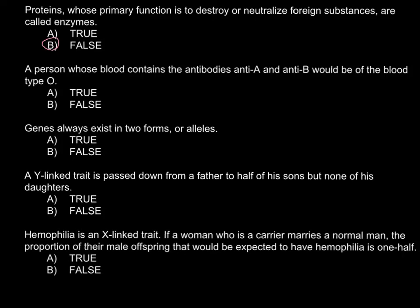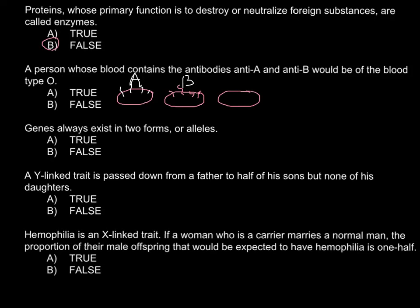The next statement: A person whose blood contains antibody A and antibody B would be of blood type O. Before I give you an answer, I want to explain the four different blood types that are possible. Imagine this is a red blood cell. On the surface we would have antigen A present — we call this blood group A. Another blood group would be blood group B, and on the surface of the red blood cells we would have antigen B.